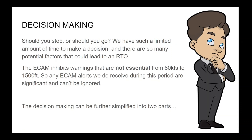Should you stop, or should you go? We have such a limited amount of time to make a decision, and there are so many potential factors that could lead to an RTO. The ECAM inhibits warnings that are not essential from 80 knots to 1,500 feet. So any ECAM alerts received during this period are significant and cannot be ignored. The decision making can be further simplified into two parts, which we will explore in the next few slides.